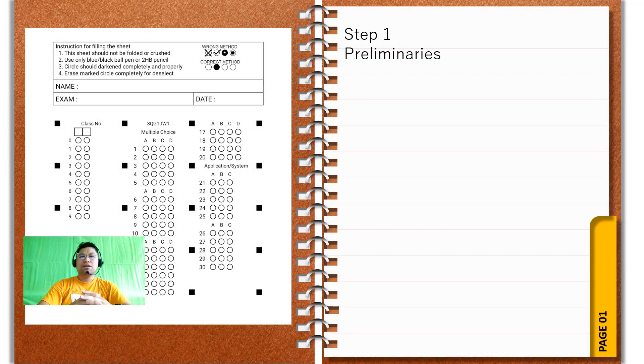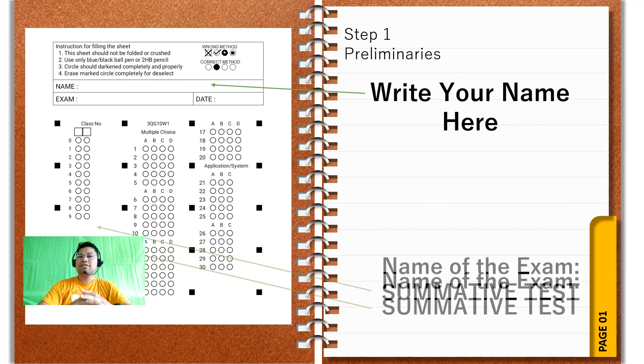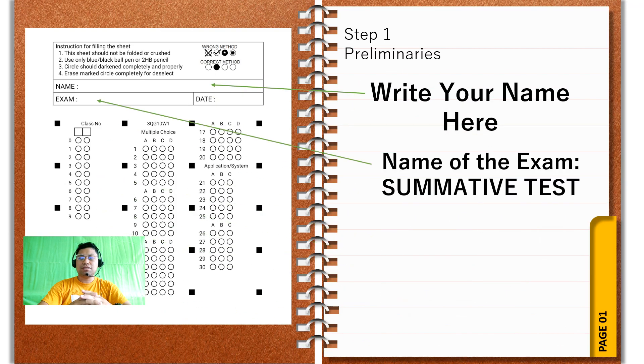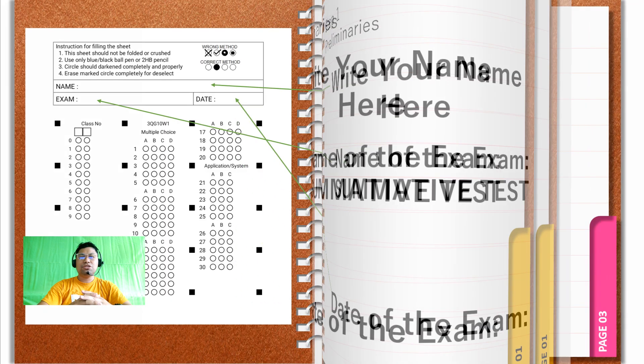Step 1: Preliminaries. You will write your name here, the name of the exam — summative test — and the date of the exam.